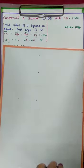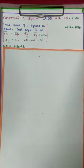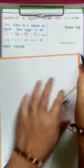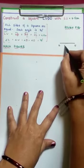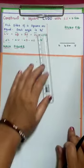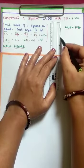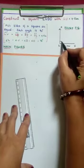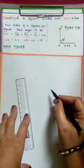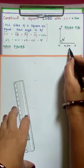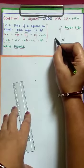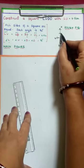Now see the rough figure. First, we take LU as base, which is 4.5 cm. Next, at L, we have to construct 90 degrees by drawing LX ray — angle XLU equals 90 degrees. The adjacent side is 4.5 cm, so OL we have to construct as 4.5 cm. Taking L as center, radius 4.5 cm, draw an arc which intersects LX ray at O.